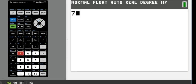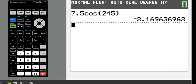All right, so we're just going to plug in 7.5 times cosine of 245, and this would give me my horizontal or x-coordinate. Okay, so I end up with negative 3.169636963, and just round it to however many places you were told to round to. I'm going to round to two decimal places for this particular problem.